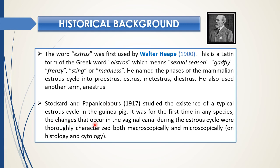Later, Stockard and Papanicolaou in 1917 studied the existence of a typical estrus cycle in guinea pigs — for the first time in the world in any species — where changes that occurred in the vaginal canal during the estrus cycle were thoroughly characterized both microscopically and macroscopically.